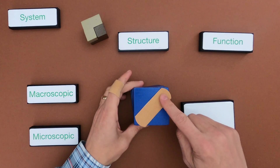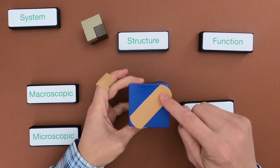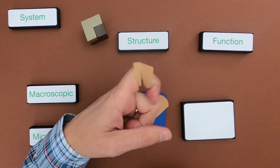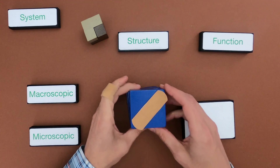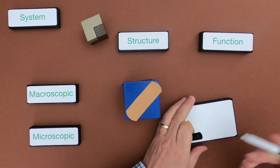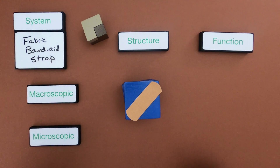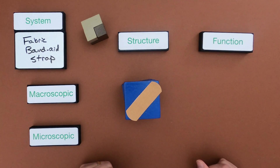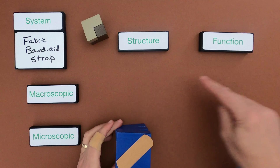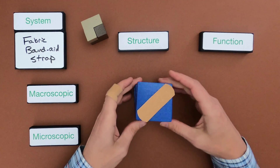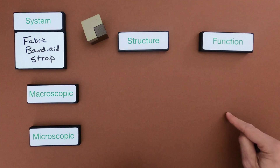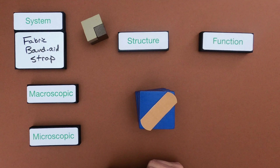For the second example, we're going to use a band-aid. There's an interesting part of some band-aids where they can stretch. I have one on my finger right now — if you have a cut near a joint, you can bend your finger and the band-aid will still cover the wound. Interestingly, this fabric stretches in only one dimension but not the other. The system is this fabric band-aid strap. I'd love you to use the thinking slides below and try to show structure and function at the macroscopic and then microscopic level. Pause the video, go show your thinking, then come back and we'll see how our thinking matches up.